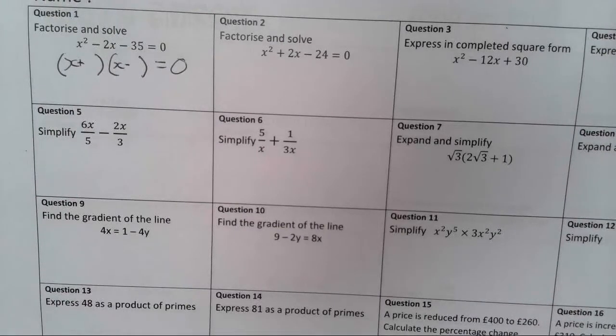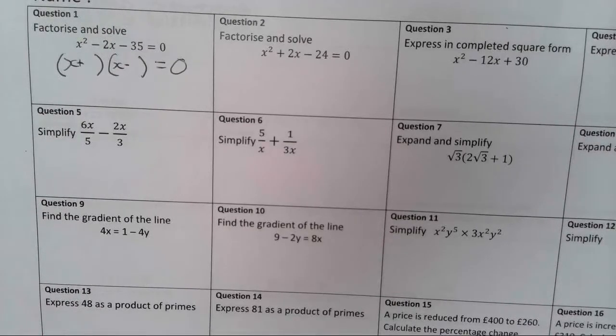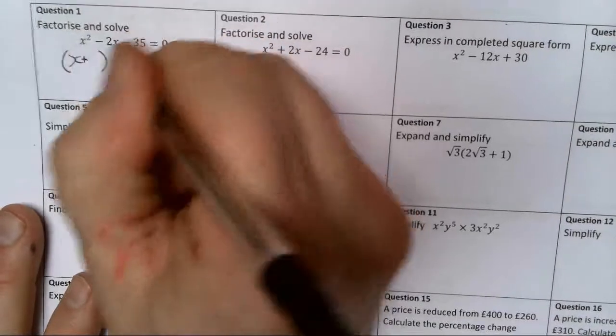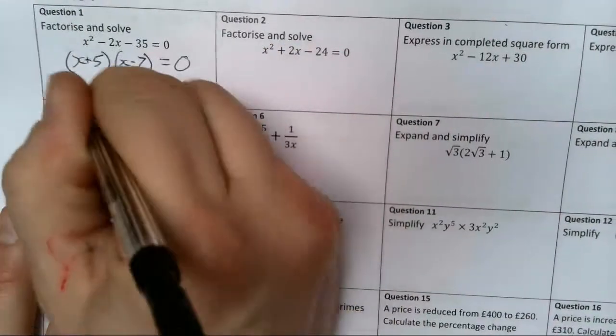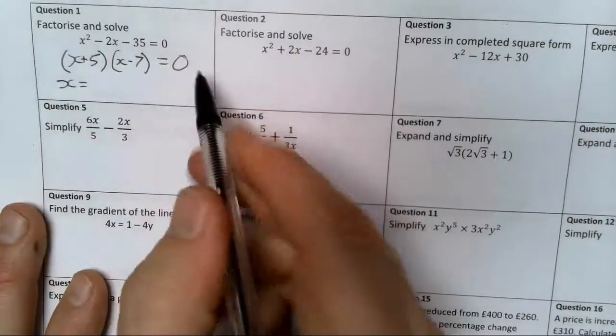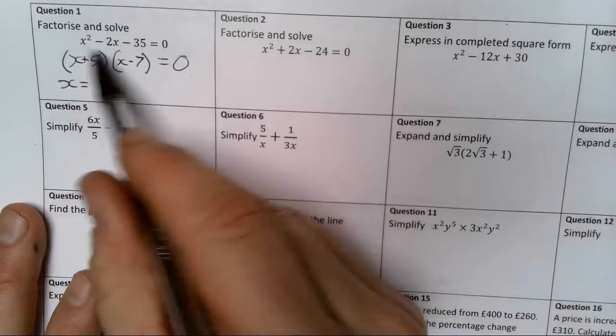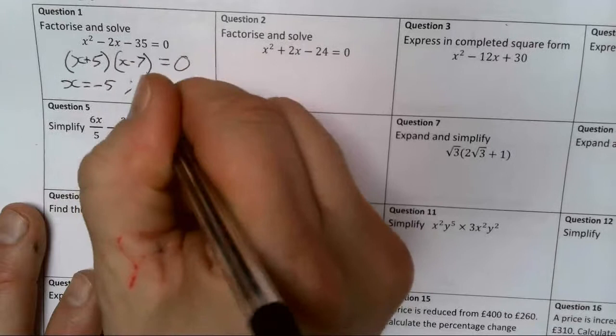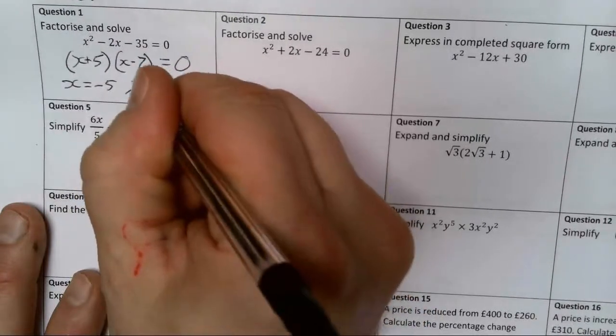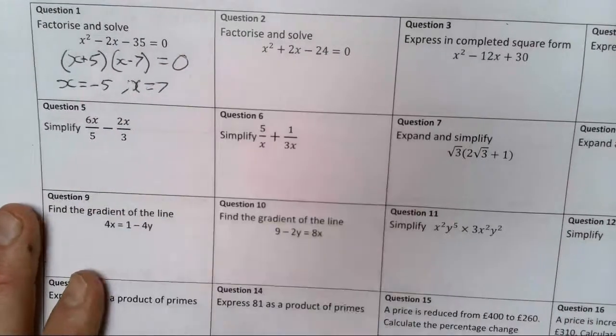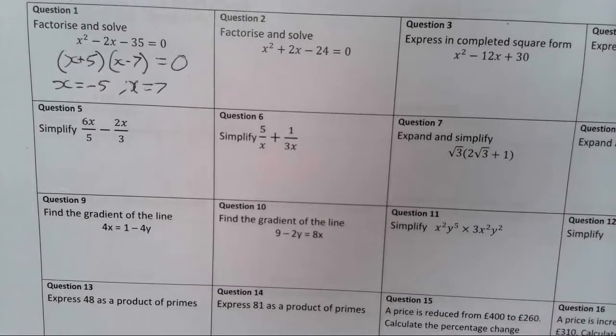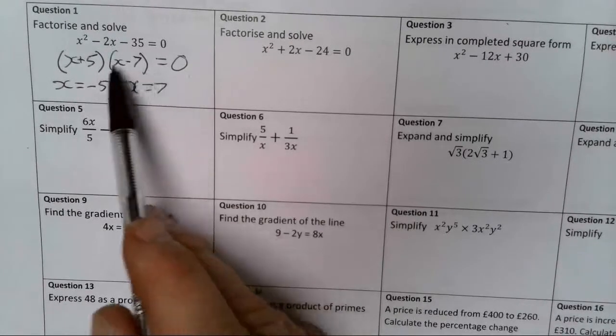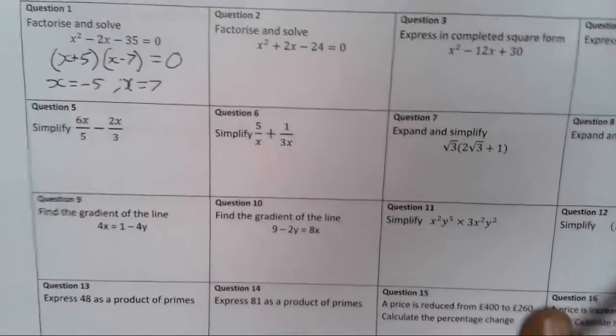Then I'm thinking about the factors of 35, and I'm straight away thinking about 7 and 5. They're going to work to get to minus 2, so I'm going to have x minus 7 and x plus 5. So then the values which make this 0 are when this bracket is 0, x is going to be equal to minus 5, and when this bracket is 0, x equals 7. 7 take away 7 is 0, multiply that.